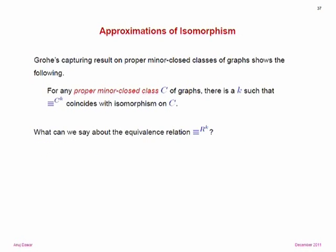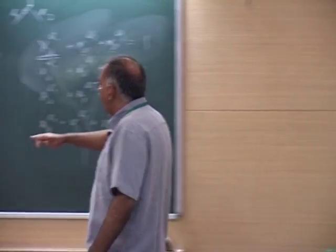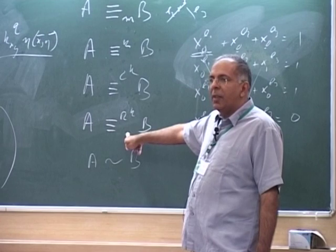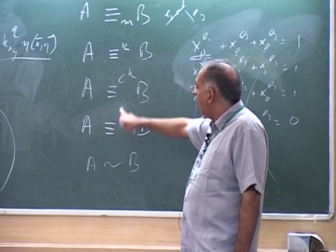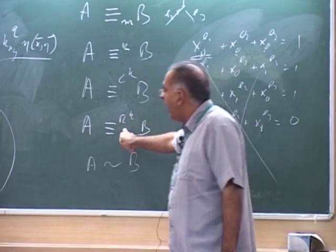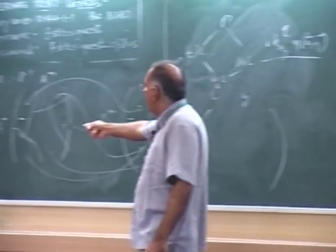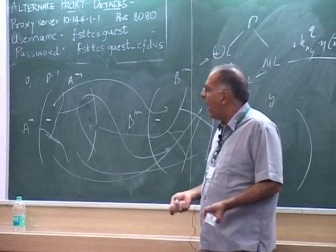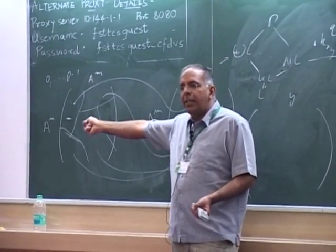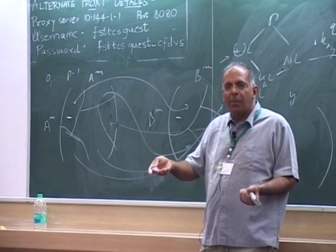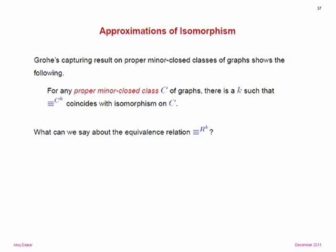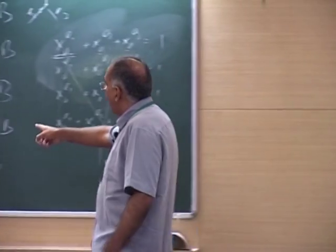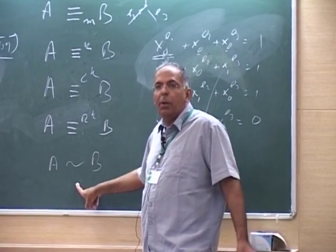First of all, we don't even know that the RK equivalence relation is in polynomial time for every k. You look at the natural algorithm — it involves a test at each stage over all partitions, which seems naturally exponential. So we don't actually have a polynomial time algorithm for testing this. Could it be that there's a fixed value of k at which this becomes isomorphism? It's possible; we don't know.